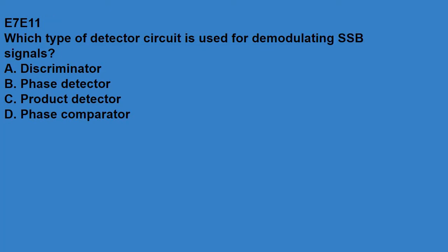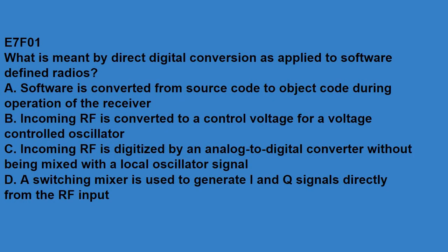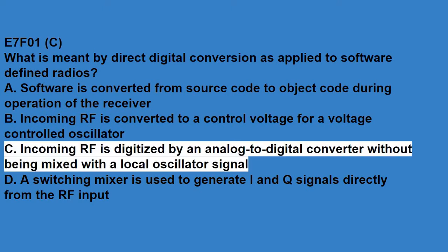E7E11, which type of detector circuit is used for demodulating SSB signals? That is a product detector. E7F covers DSP filtering and other operations, software defined radio fundamentals, DSP modulation and demodulation. E7F01, what is meant by direct digital conversion as applied to software defined radios? Incoming RF is digitized by an analog to digital converter without being mixed with a local oscillator signal.